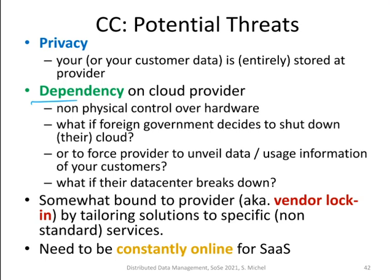What happens if your data center breaks down? Where is your data and how can you get it back? You are also bound to the provider — this is called vendor lock-in. When you tailor your application to all the fancy services Amazon provides, it becomes difficult to switch away if you are unhappy with Amazon or disagree with their practices. It would be costly to redesign your application to work with a different cloud provider like Microsoft. And for software as a service, you need to be constantly online — if the internet connection stops working, you cannot use the services.